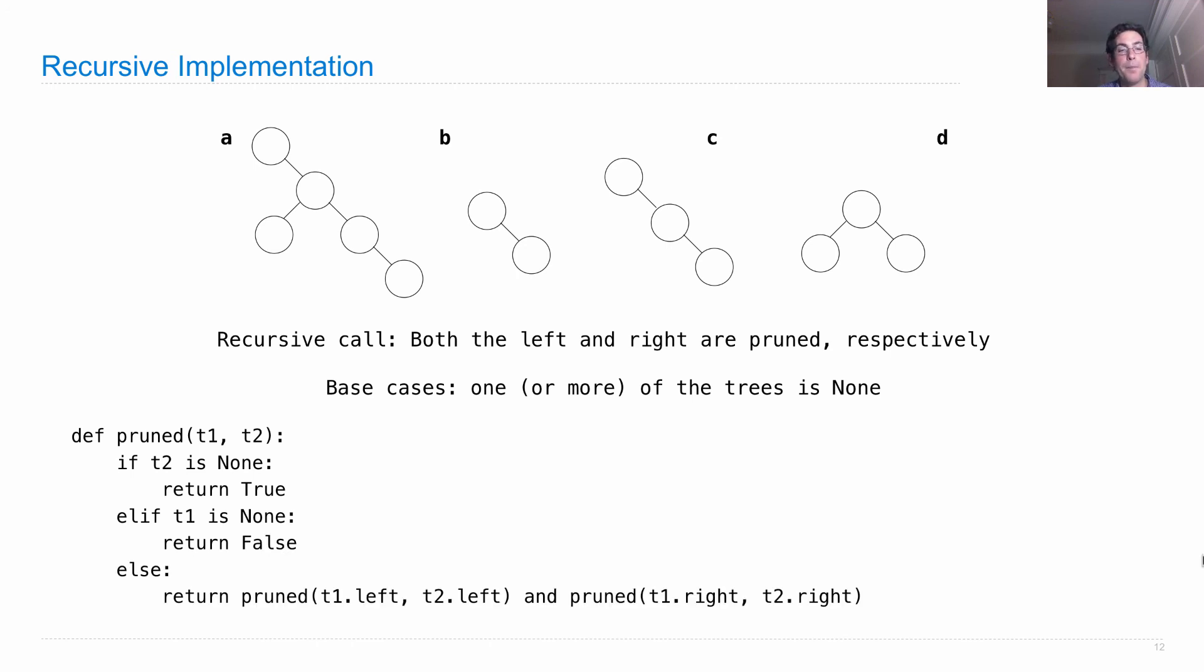Otherwise, we make a recursive call, which checks to see whether the left branch of T2 is a pruned version of the left branch of T1, and whether the right branch of T2 is the pruned version of the right branch of T1. And then we're finished. We'll see you next time.